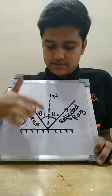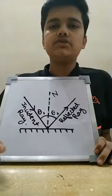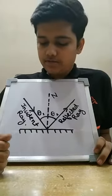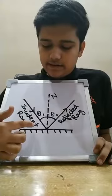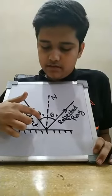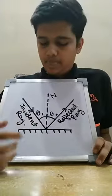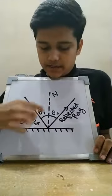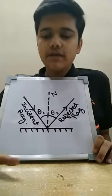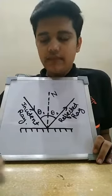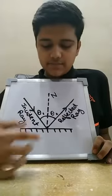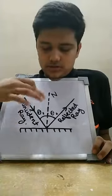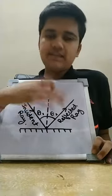Some of you might be thinking, what is this? This is an imaginary line called the normal, which is perpendicular to the mirror. This is the incident ray. The angle formed here is called the incident angle because it is subtended by the normal and the incident ray. Similarly, on the other side, this would be called the reflected angle because it is subtended by the normal and the reflected ray.